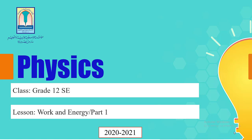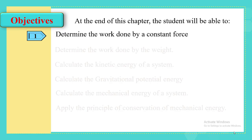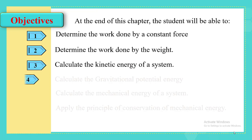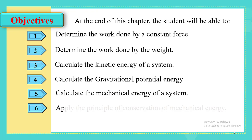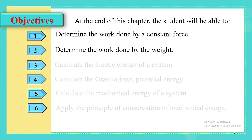The first chapter for grade 12 SE is titled Work and Energy. The main objectives of this chapter are: determine the work done by a constant force, determine the work done by the weight, calculate the kinetic energy, the gravitational potential energy, and the mechanical energy. The last objective is to apply the principle of conservation of mechanical energy.